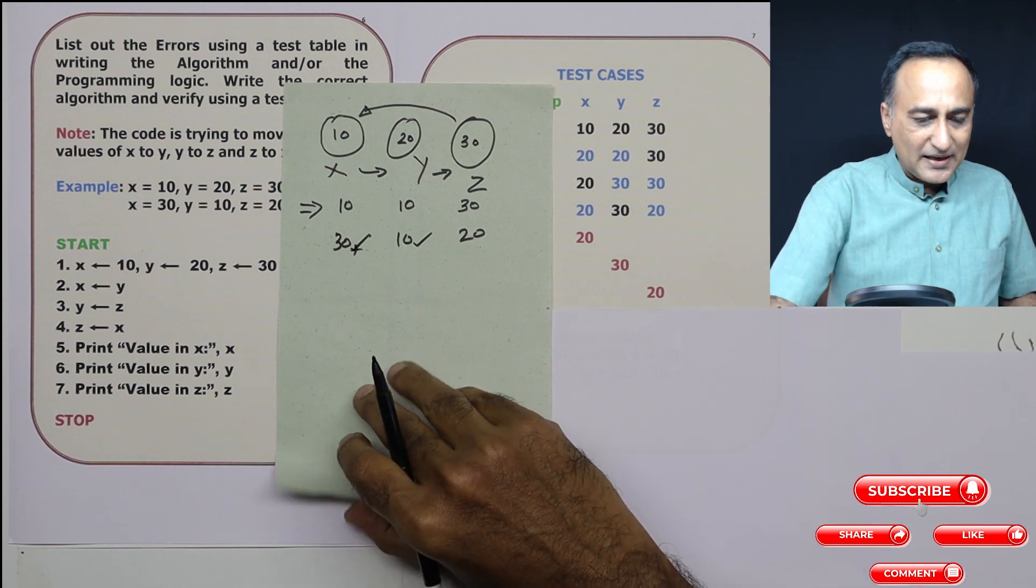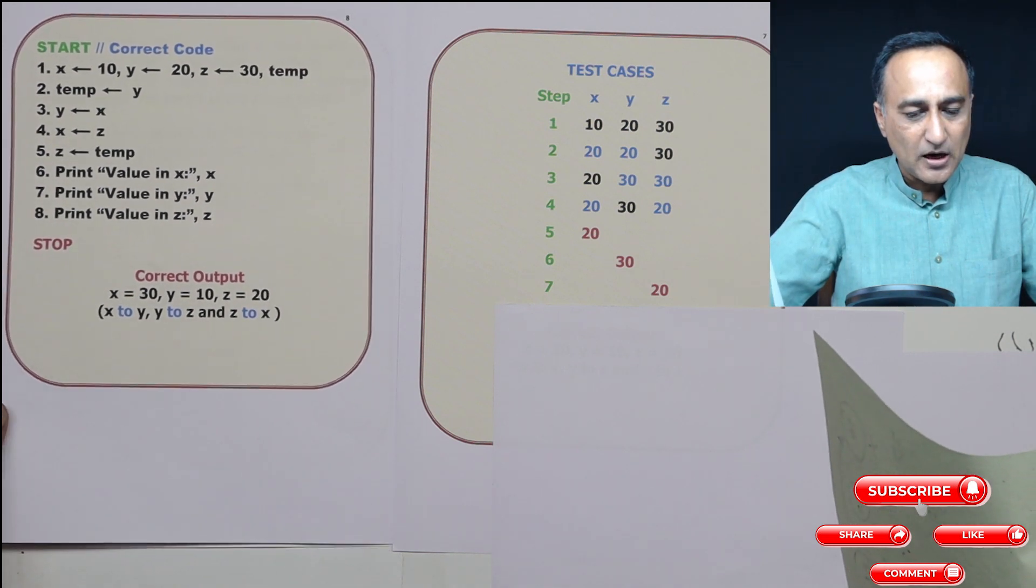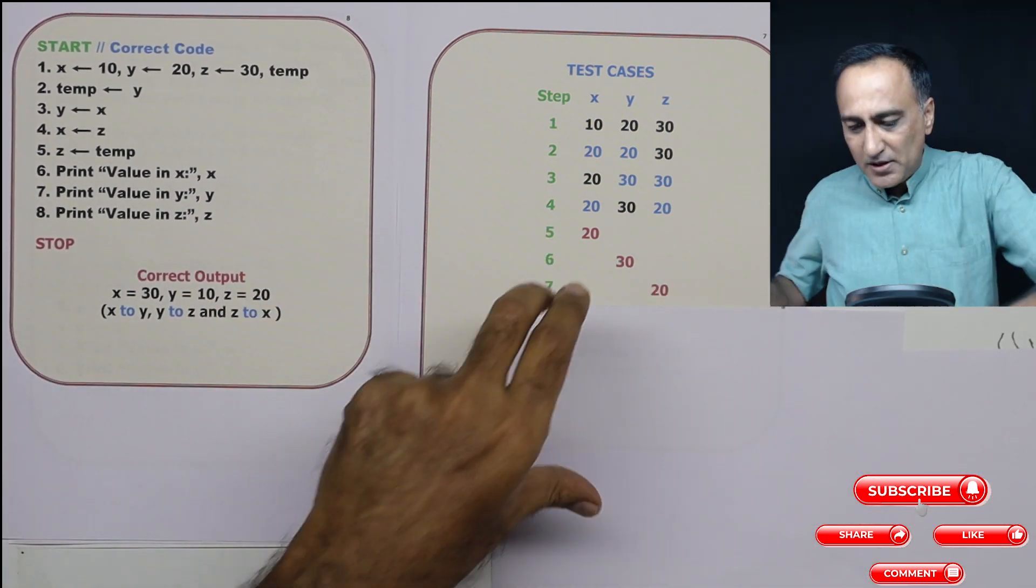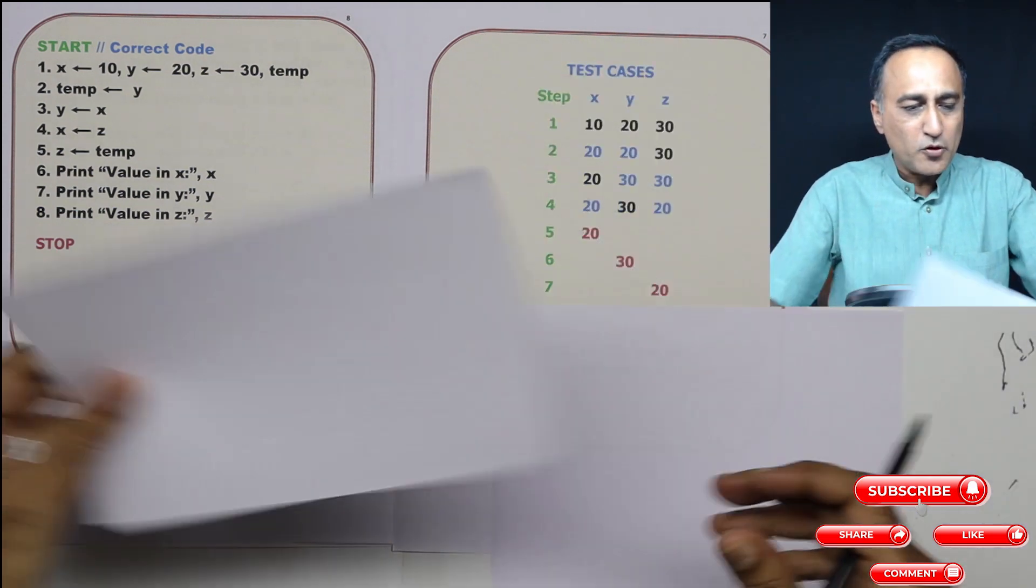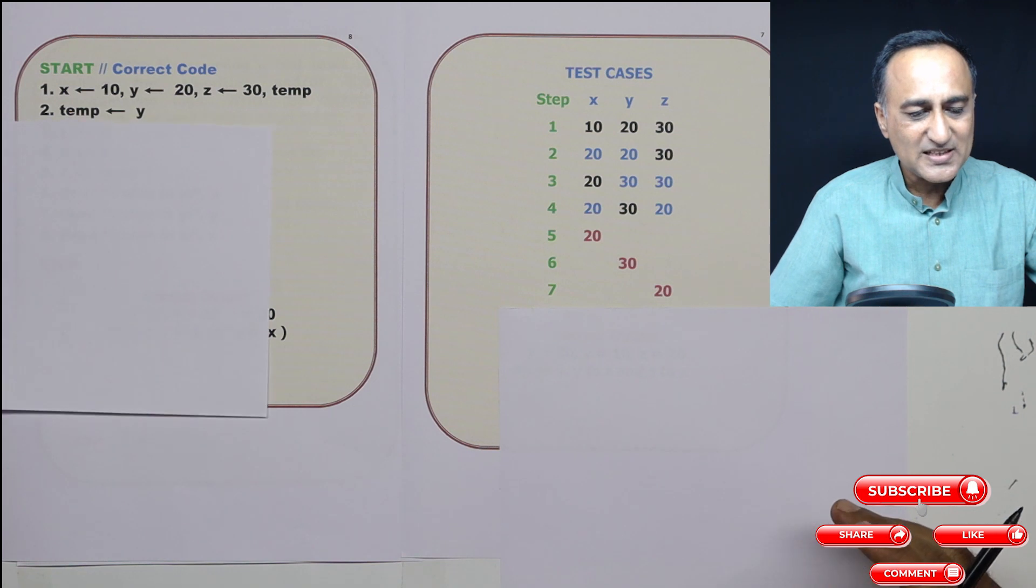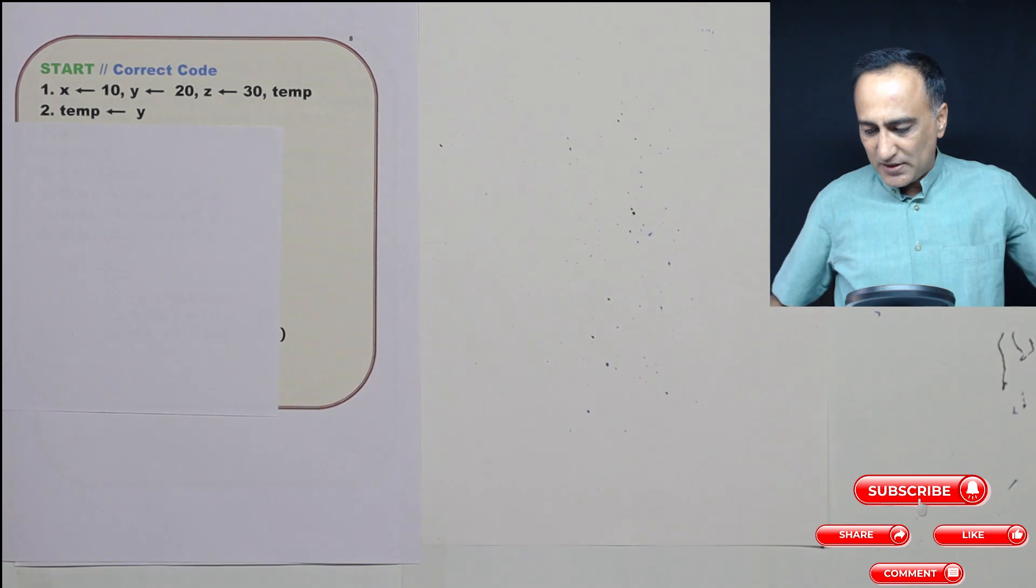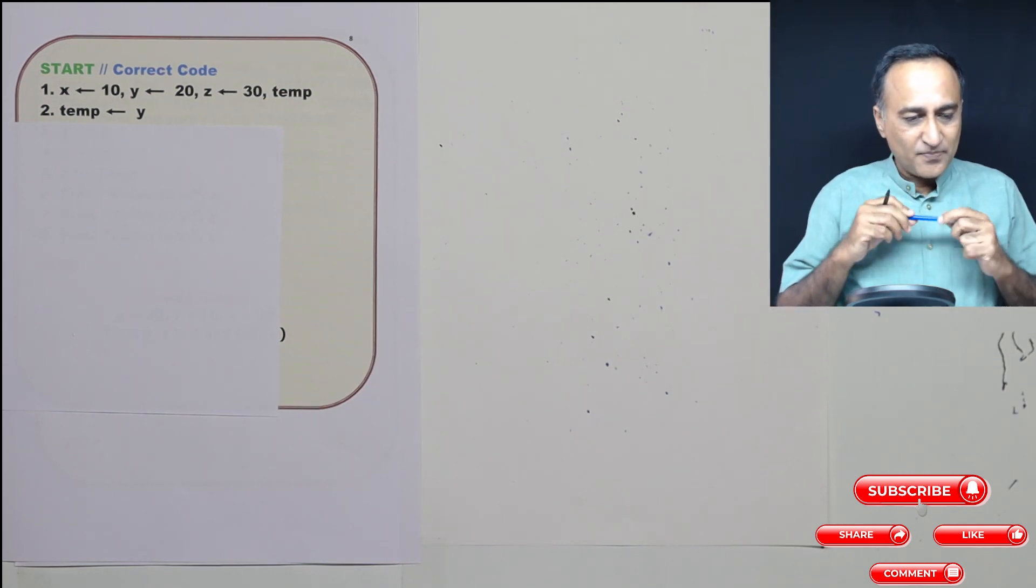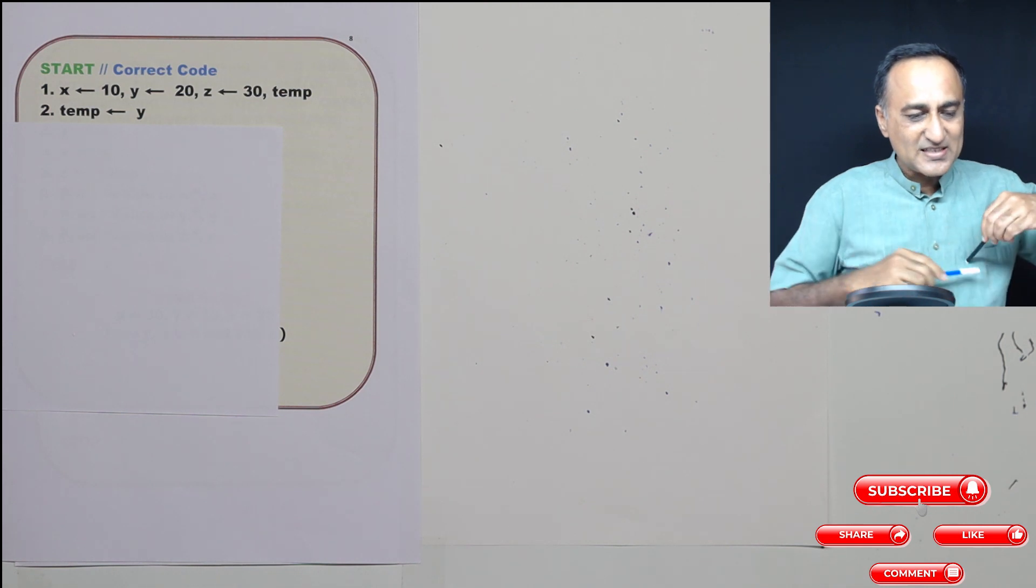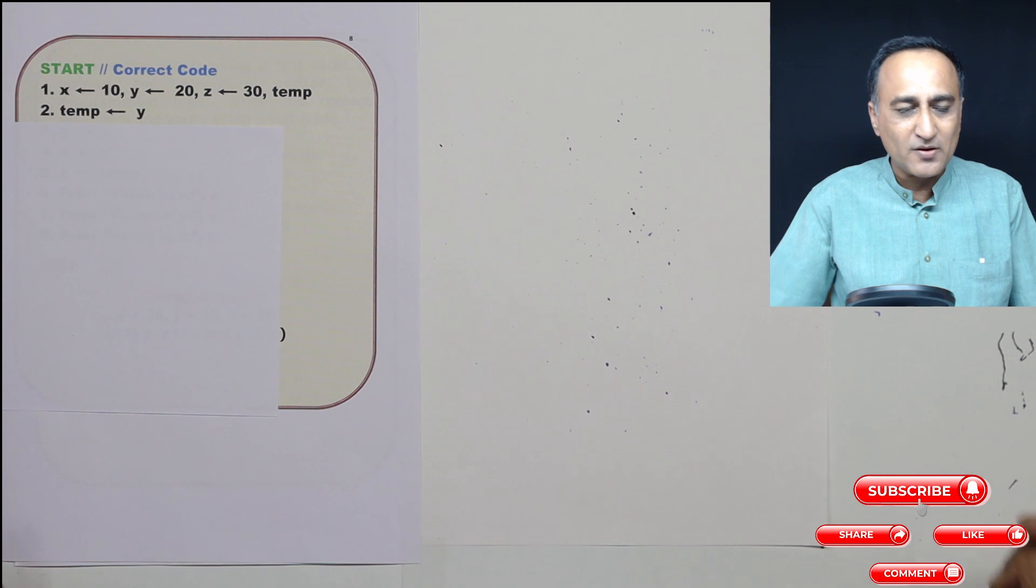Now let's try to take a look at this particular code or try to solve this code using a better approach. So in this approach, what I am going to do here is I am going to use a variable called temp. And then once we do the testing, things will be clear as to whether the result is correct or wrong. So first step, what I am trying to do here is I am defining x as 10, y as 20, z as 30, and a variable temp, which I have not given the value of anything.